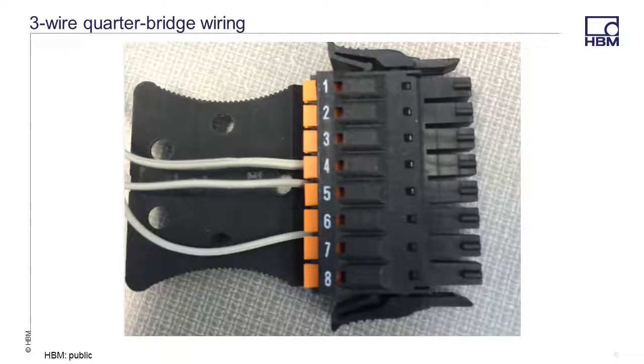Here is a close-up of the MX1615B connector with a three wire strain gauge connection. In the previous slide, it showed that pin 8 was for cable shield, but since this cable is unshielded, there is no connection. There is also no TEDS connection. The TEDS and shield are optional connections.